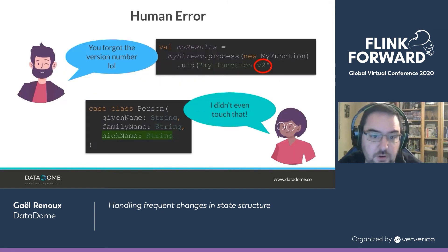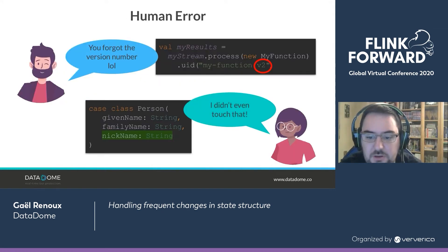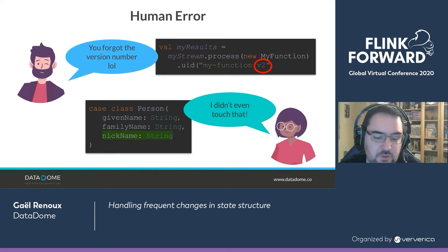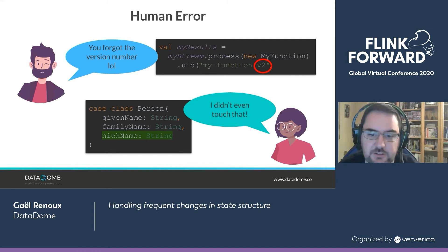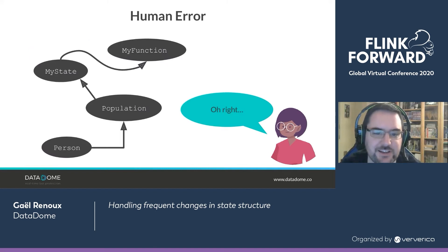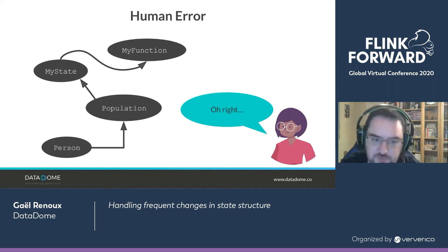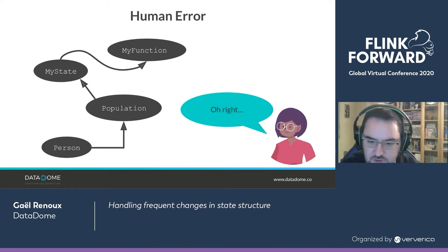So what happened? We should have changed the version number. Why didn't we? Well, we were adding a new feature — adding a few fields on the model class. And why didn't it work? Because we had modified a class that's used inside a class that's used inside a class that is actually the state of our function. We should have remembered to update the version number.